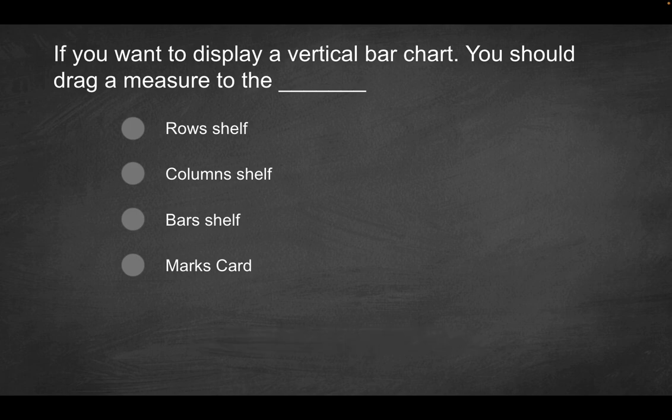Next question kind of appears to be a simple one, but if I'm honest I myself stumbled upon this initially. So let's say you want to display a vertical bar chart, it could be different dimensions, it could just be a single bar, but you want a vertical bar. You should drag a measure to the row shelf, the column shelf, the bar shelf, or the marks card. Which of these is going to allow you to have a vertical bar?